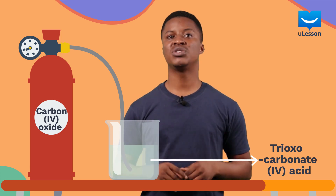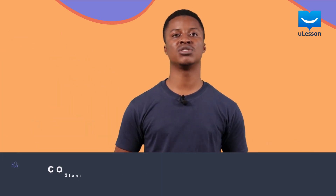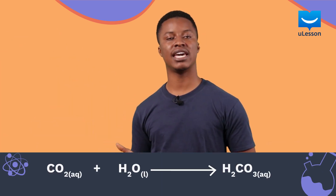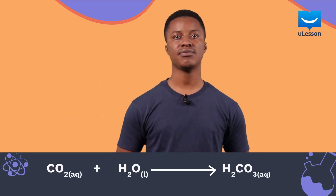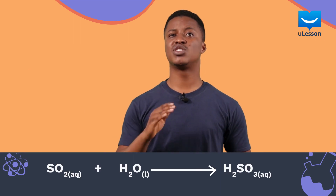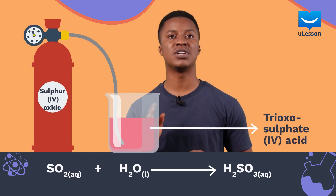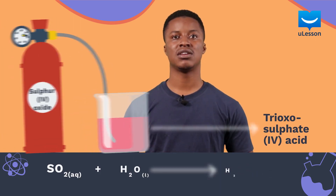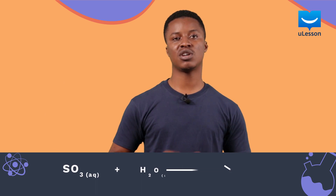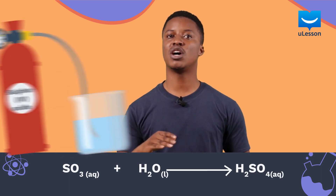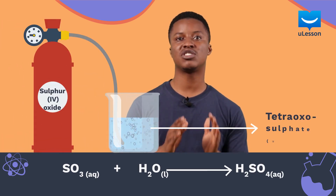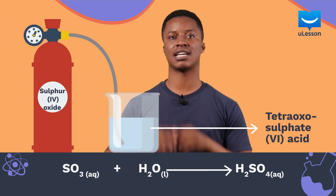The chemical equation for this reaction is shown here. Sulfur dioxide gas dissolves in water to form trioxosulfate acid, while sulfur trioxide gas dissolves in water to form tetraoxosulfate acid.